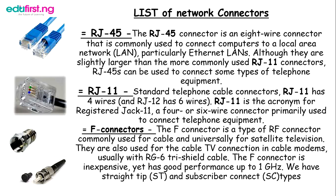F connectors: if you've seen a DSTV cable being installed or a TV antenna being set up, the connector attached to the back of the TV or antenna is called an F connector. It's a type of RF connector commonly used for cable television and is also used for cable TV connections in cable modems like DSTV. It typically uses RG6 coaxial cable. The F connector is inexpensive yet has good performance up to 1 gigahertz. Other connector types include Straight Tip (ST) and Subscriber Connector (SC), used in fiber optic connections.